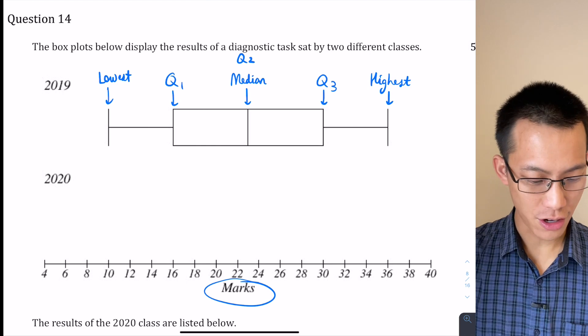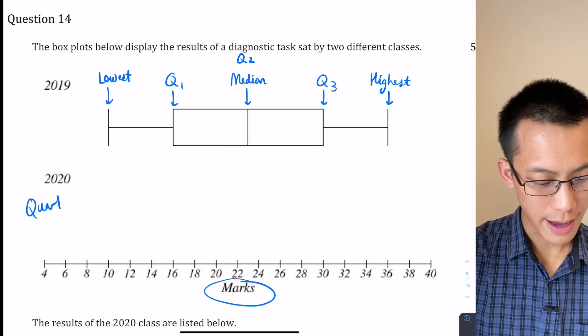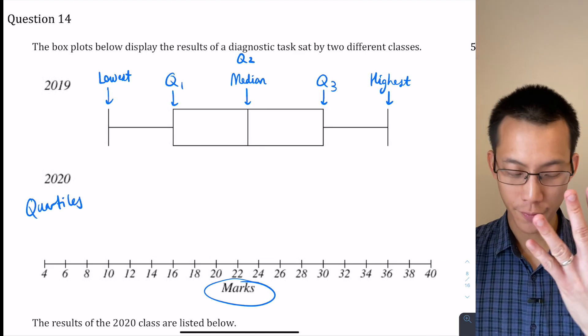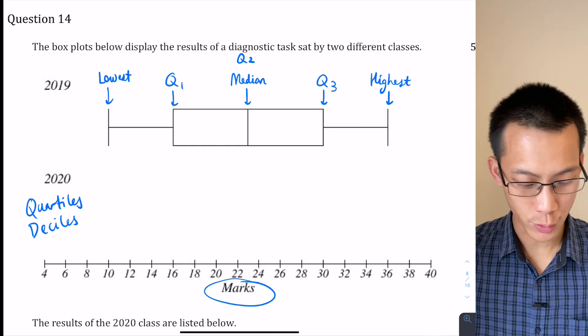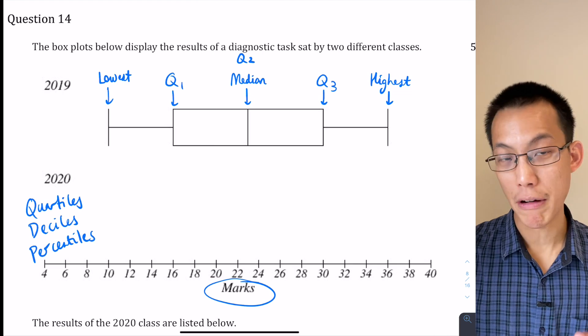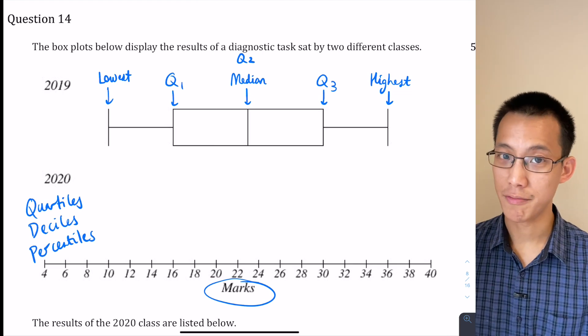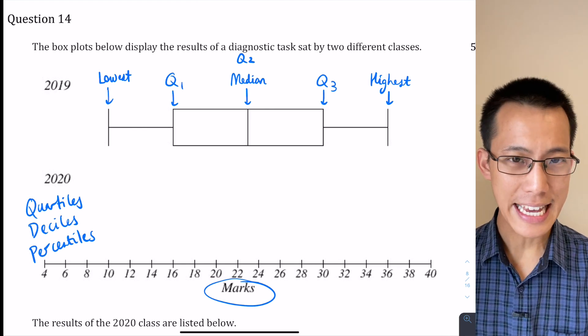And you can sort of extend this. You've got quartiles which break your data set into four, you've got deciles which break your data set into ten equal chunks, and then a very common one is the percentiles which break your data up into 100 different sections. And of course the most common percentile that people are very familiar with is the ATAR.